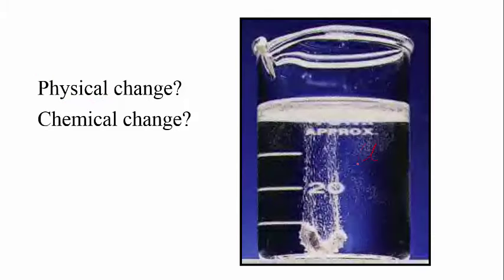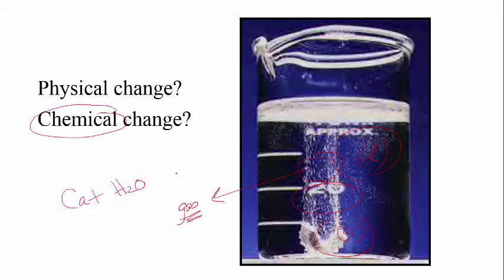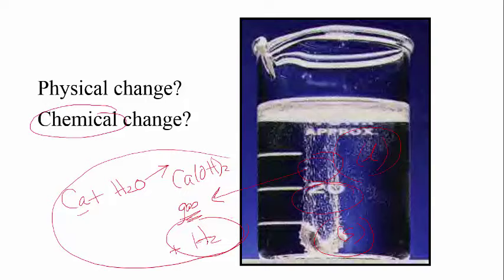Here, if we had a liquid and dropped a solid into it, and now we see this evidence, this would lead us to believe a chemical change. Why is that? Because this is the formation of a gas that cannot be explained by the presence of solid and liquid. So this gas is a new substance. The chemical reaction for this would be calcium plus water. So water was the liquid. Calcium is the solid. It makes calcium hydroxide, which you cannot see. That's dissolved in solution. And these bubbles are hydrogen gas.